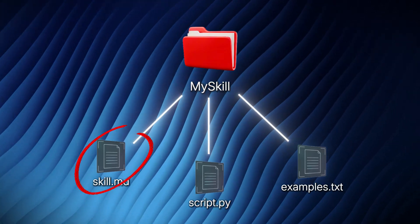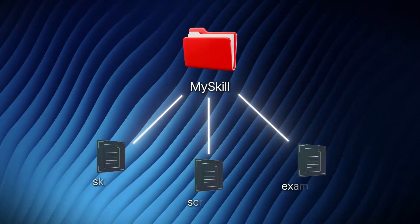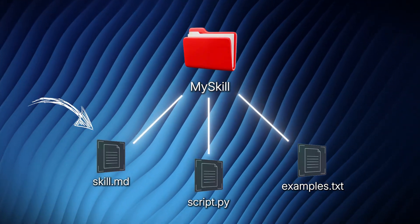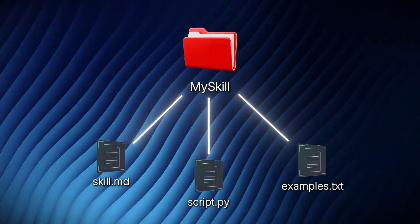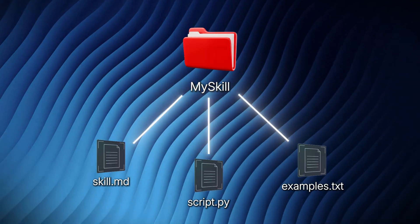In short, an Agent Skill is just a folder with files in it. You will have the Skill.md file — just a markdown — describing what the skill is about. A skill can be anything, like a writing style or how to execute some specific task. In this folder, along with the Skill.md, you might optionally have other files, like other documents relevant to the skill or scripts that the agent can use.